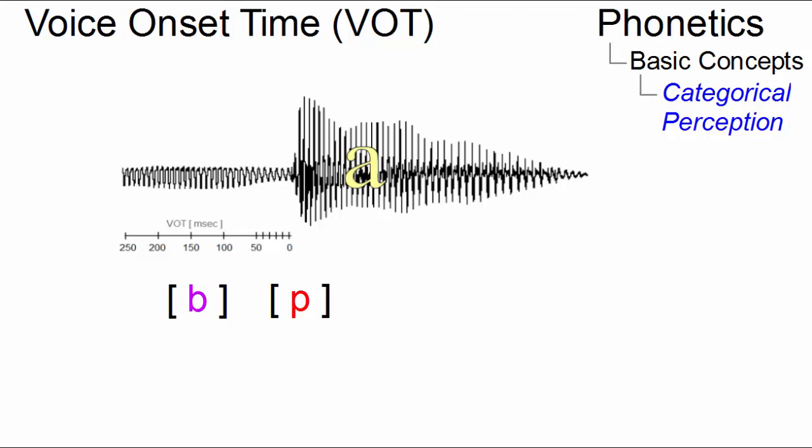As we heard, a VOT value of around 30 milliseconds serves as the key factor. In other words, if VOT is longer than 30 milliseconds, we hear bar. If VOT is shorter, the perceptual result is par.